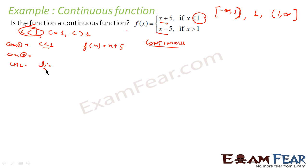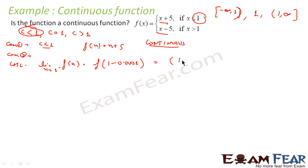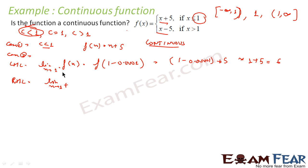The left hand limit is: limit as x tends to 1 minus of f(x), which is f(1 - 0.0001). Since this value is less than 1, we use the first piece of the function, which gives 1 minus (-0.0001) + 5, almost equal to 1 + 5 = 6. So the left hand limit is 6.